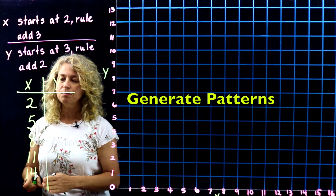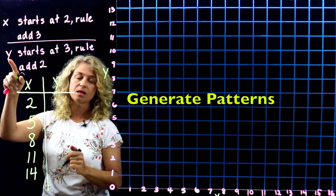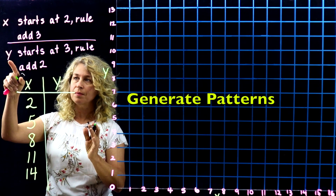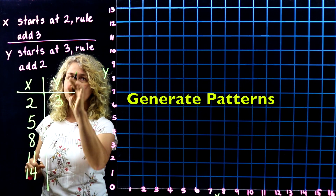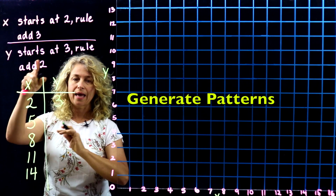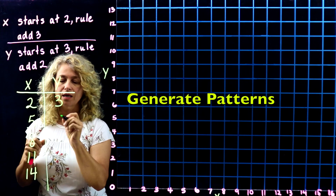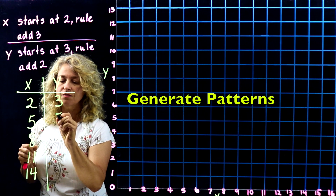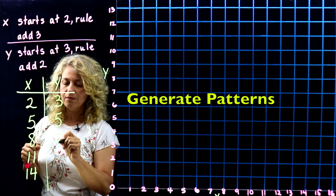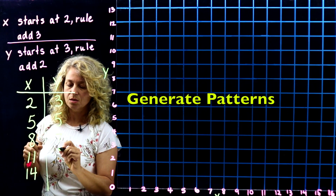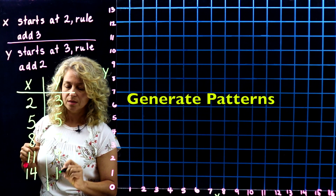Now let's look at pattern Y. It starts at 3, and the rule is add 2. So: 3, plus 2 is 5, plus 2 is 7, plus 2 is 9, plus 2 is 11.